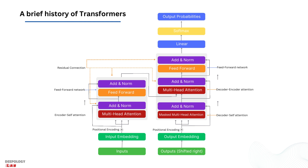Second, transformers use the attention mechanism. It is called the attention mechanism because transformers understand the context and can access past information. RNNs can access past information only to a certain extent, mostly only the previous state, and the information gets lost in the following states.